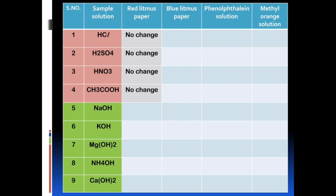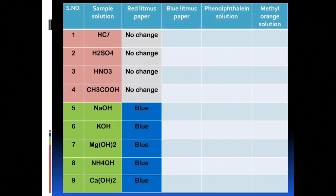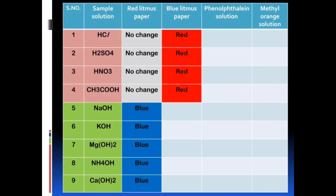When we dip a red litmus paper into acidic solutions, we can't see any change in color of the red litmus paper. This happens for all the acidic solutions. Therefore, we have written 'no change' for the acidic solutions under red litmus paper. When we dip a red litmus paper into basic solutions, the red litmus paper would turn to blue. This happens for all the basic solutions. Therefore, we have written 'blue' for the basic solutions under red litmus paper. When we dip a blue litmus paper into basic solutions, we can't see any change in color of the blue litmus paper.